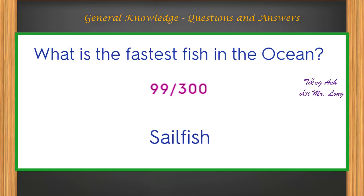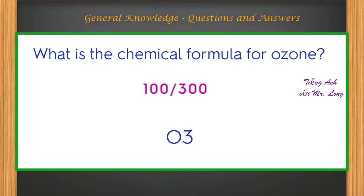What is the fastest fish in the ocean? Sailfish. What is the chemical formula for ozone? O3.